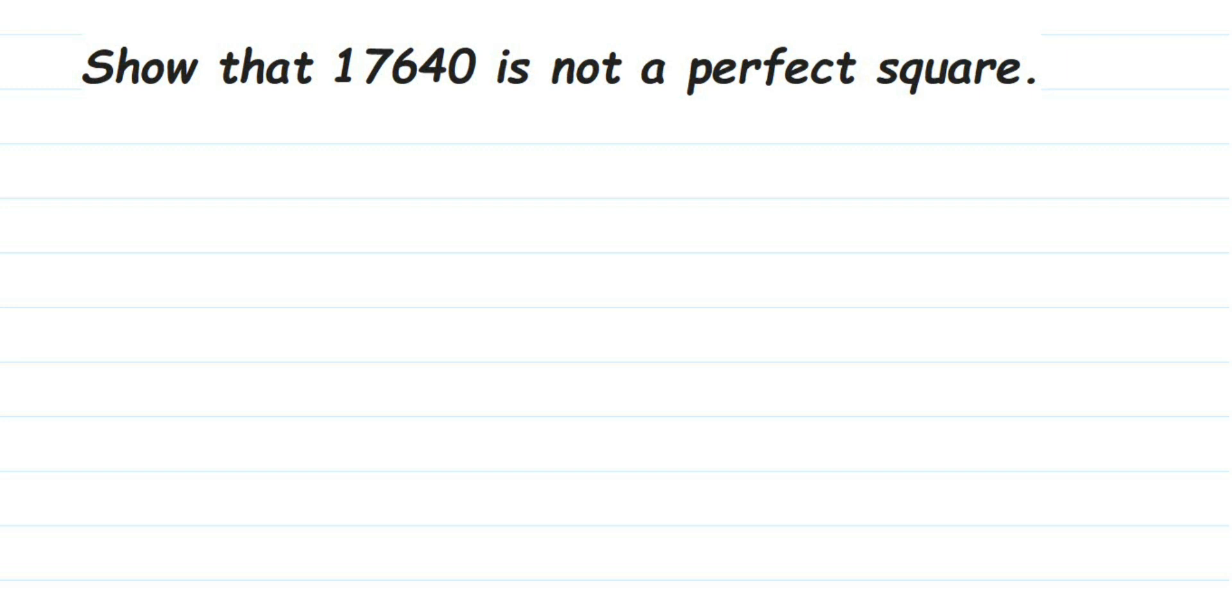Hey everyone, here's a question from square and square root: show that 17,640 is not a perfect square. Whenever you have to check if a given number is a perfect square or not, we're going to use a prime factorization method. We're going to factorize this number using prime factorization, and then later we're going to see if each factor is in pair or not.